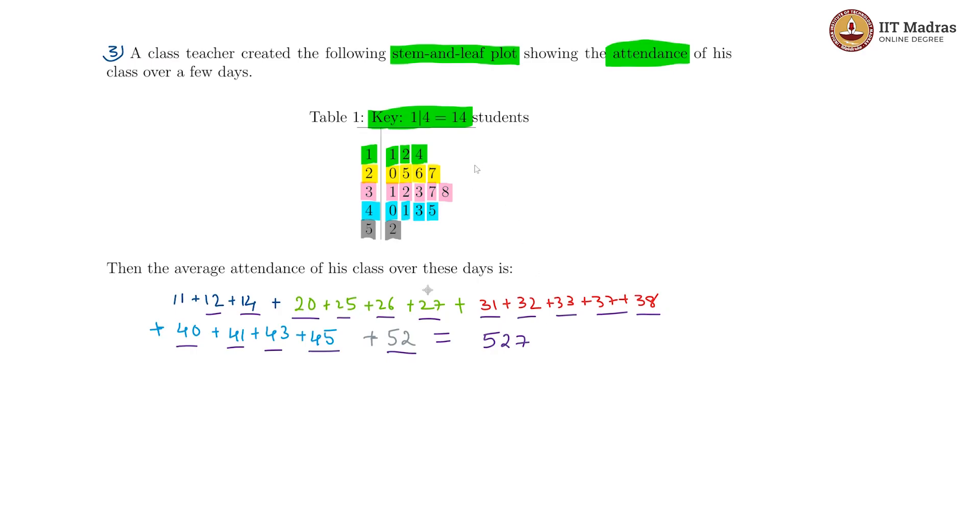Now we also have to find out how many days the attendances have been calculated for. So in the 10s there are 3, in the 20s there are 4, in the 30s there are 5, in the 40s there are 4 again, in the 50s there is only 1. So a total of 3 plus 4 is 7, 7 plus 5 is 12, 12 plus 4 is 16, 16 plus 1 is 17. So totally over 17 days.